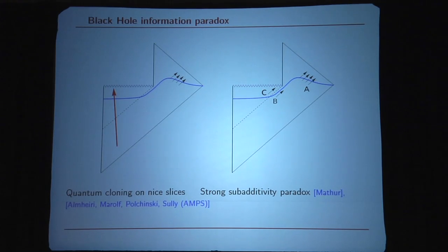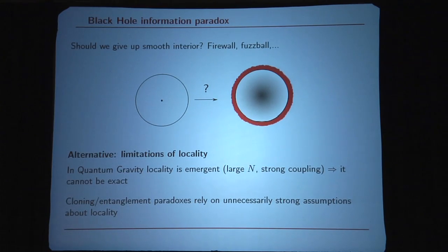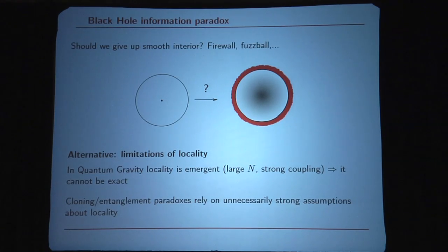As we heard in Joe's talk, one possibility is to give up the smooth interior and replace the black hole by some kind of firewall or fuzzball. But I would try to argue for an alternative which is based on taking into account the limitations of locality, and in particular the fact that in quantum gravity locality is emergent and cannot be an exact notion. I would argue that the cloning and entanglement paradoxes rely on unnecessarily strong assumptions about locality.